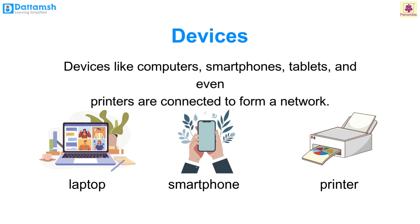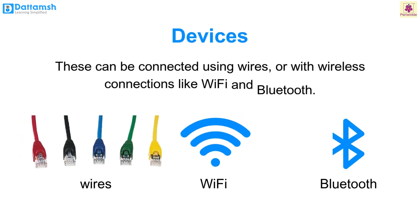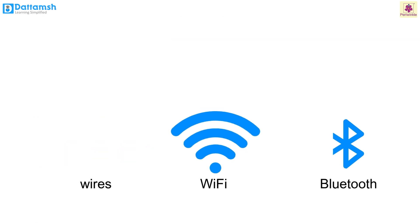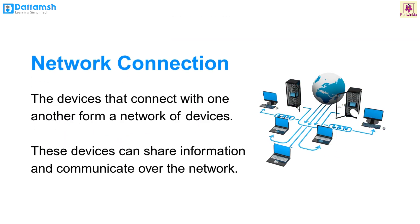Now let's look at some components of a network. Devices like computers, smartphones, tablets and even printers are connected to form a network. These can be connected using wires or with wireless connections like Wi-Fi and Bluetooth. The devices that connect with one another form a network, and these devices can share information and communicate over the network.